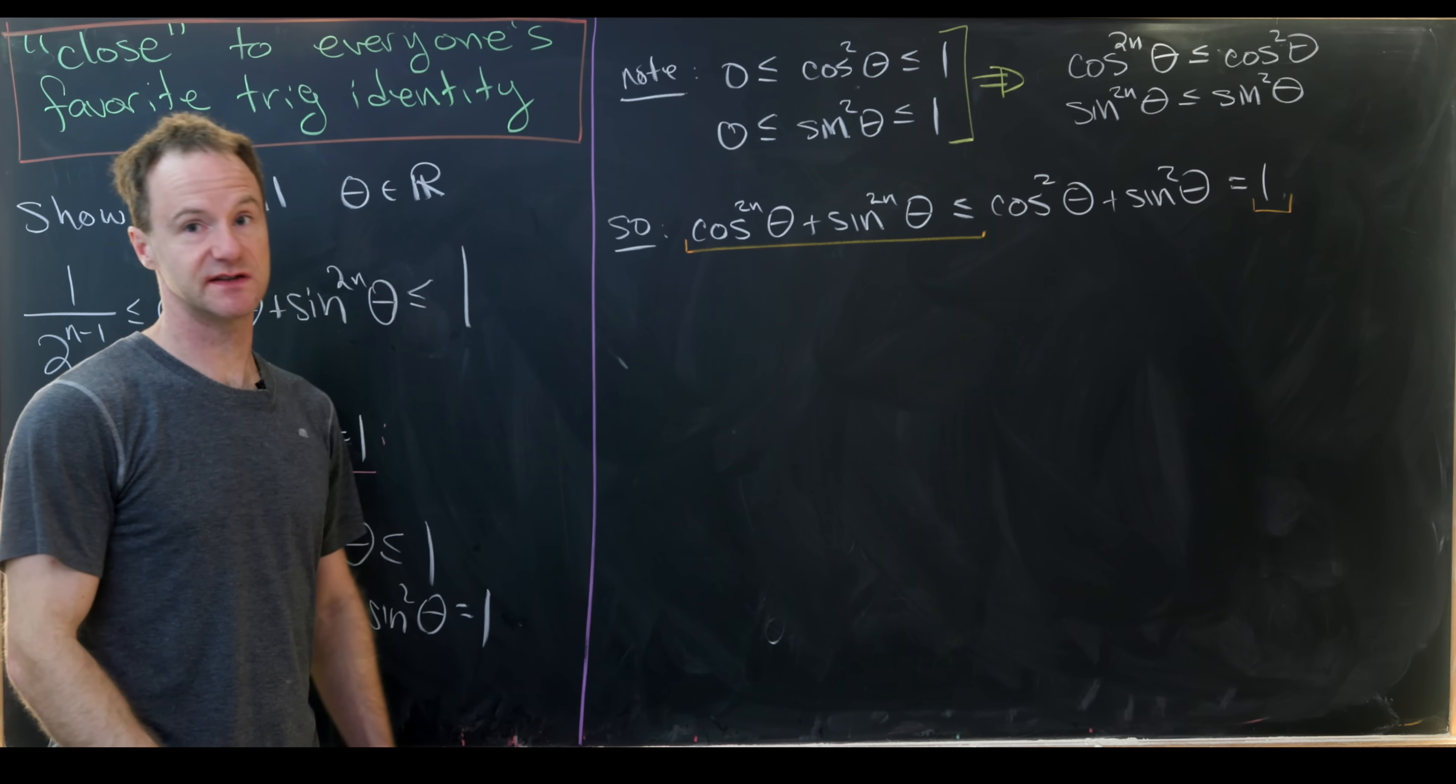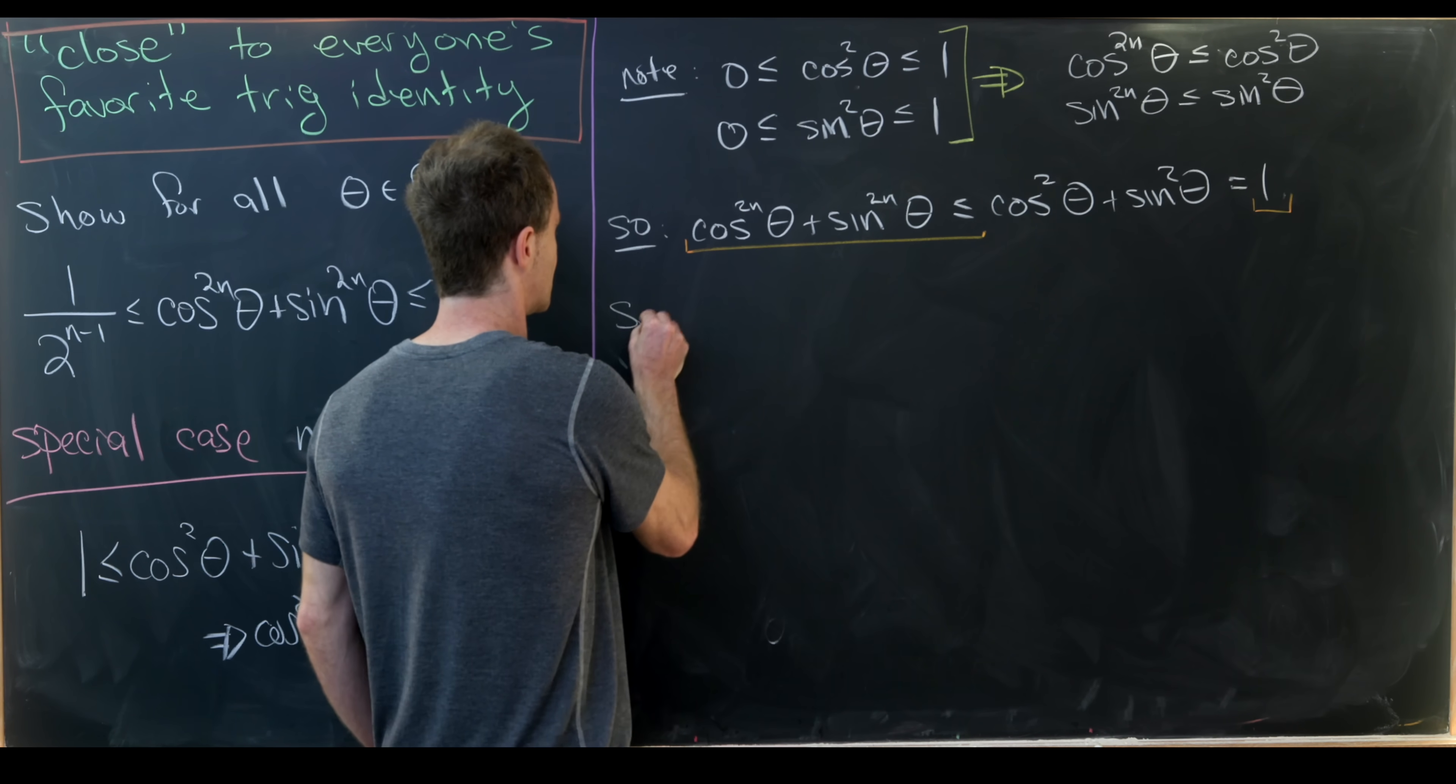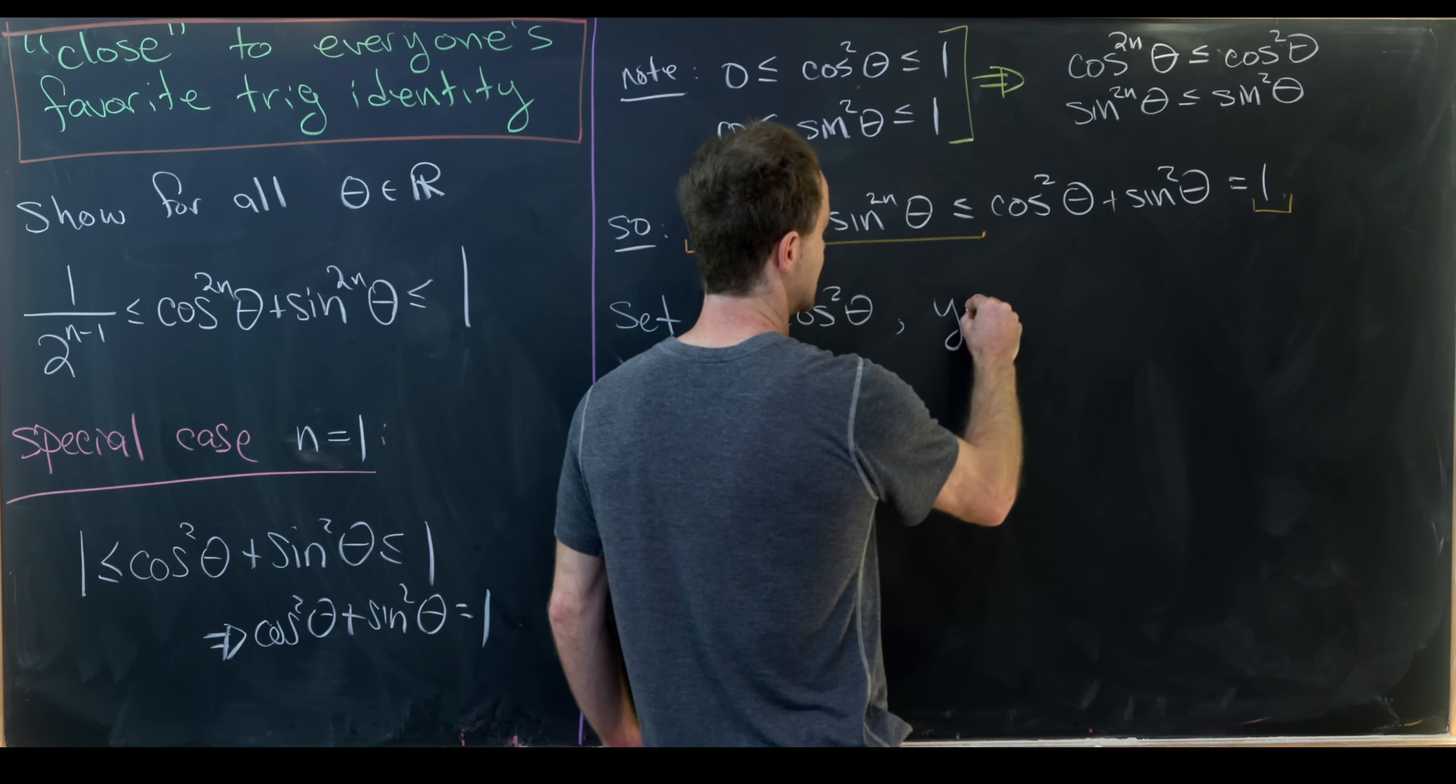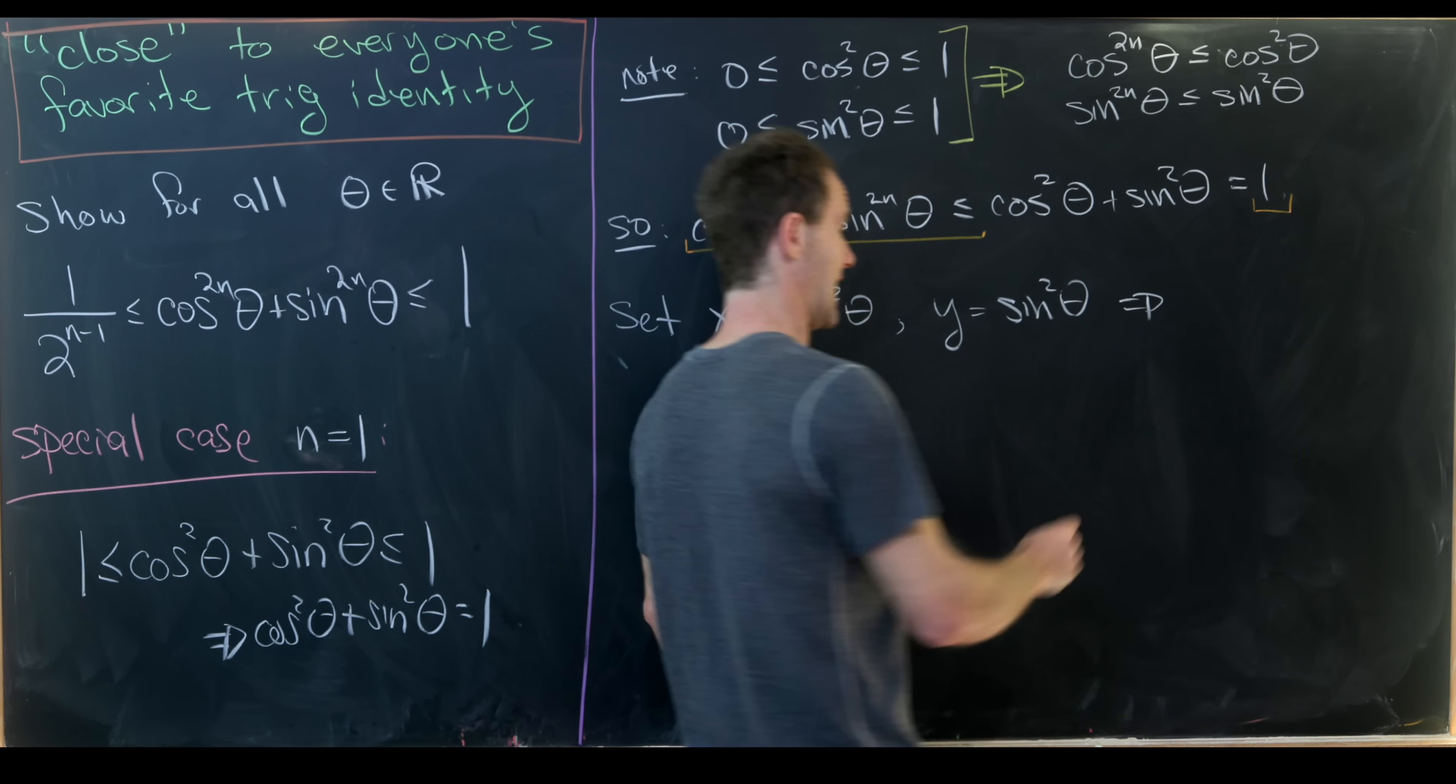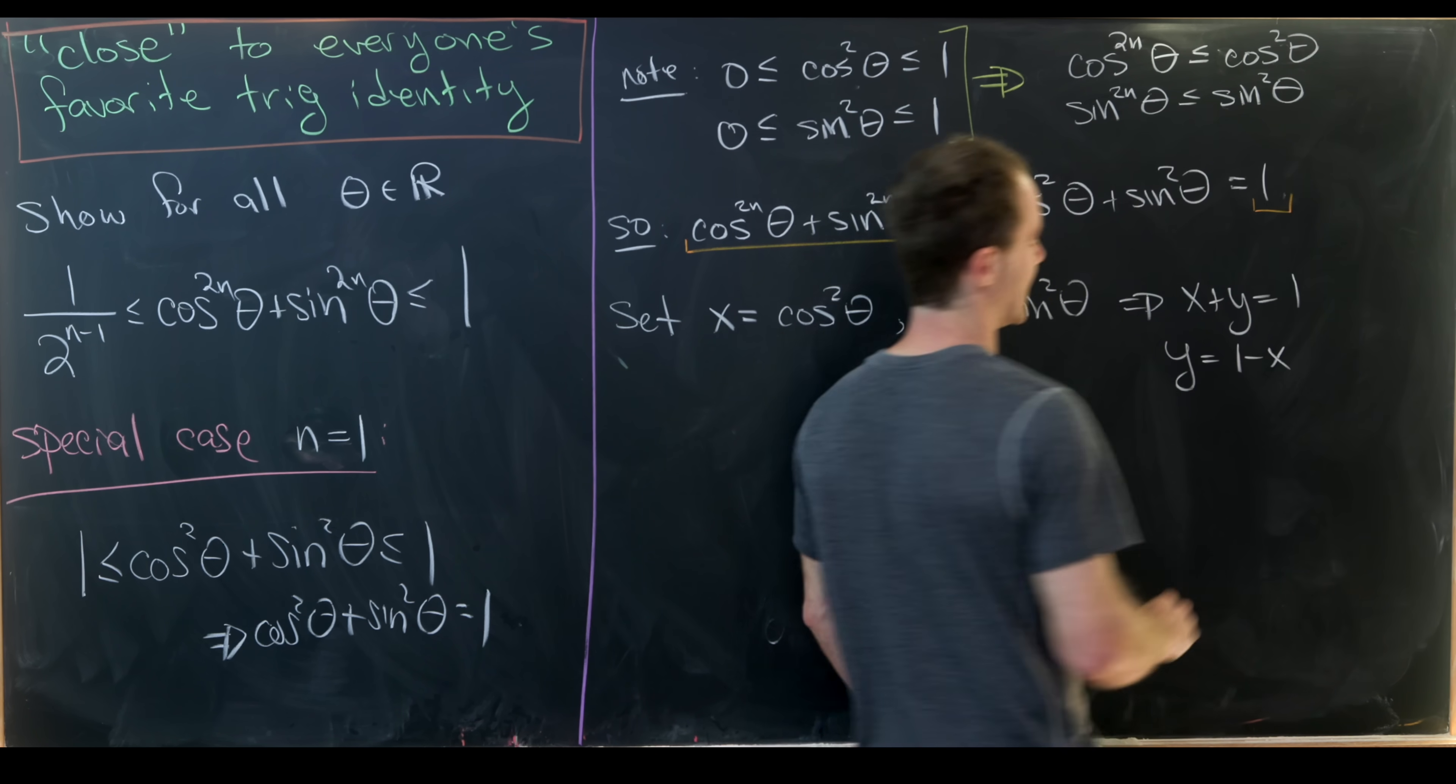So now let's move on to the left-hand portion of this inequality, bounding this below. So let's start by setting x equal to cosine squared theta, and we'll set y equal to sine squared theta. And notice that means that x plus y is equal to 1, or y is equal to 1 minus x.